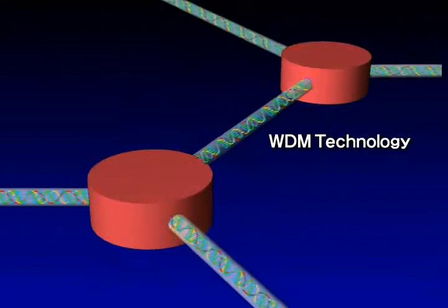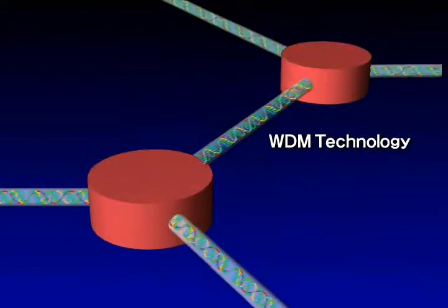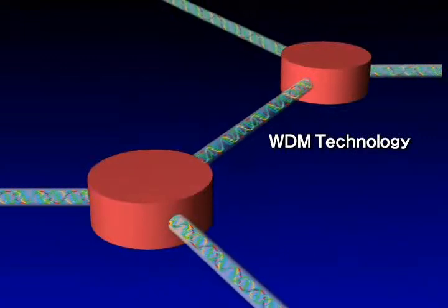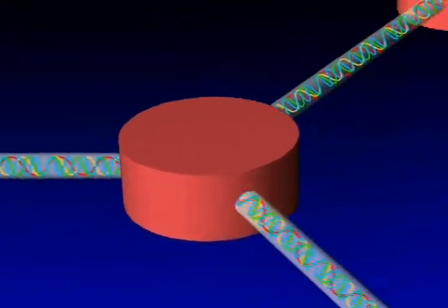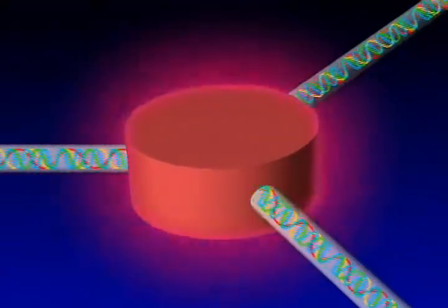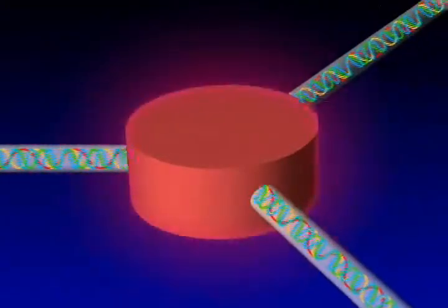Since the introduction of WDM technology, optical links are capable of transmitting high-speed, large-capacity data, but optical signals are processed after being converted into electrical signals, a time-consuming step.